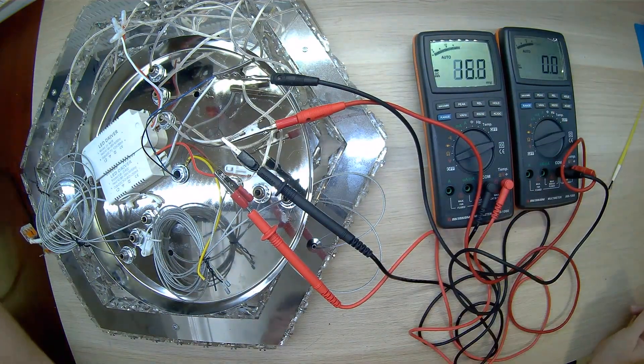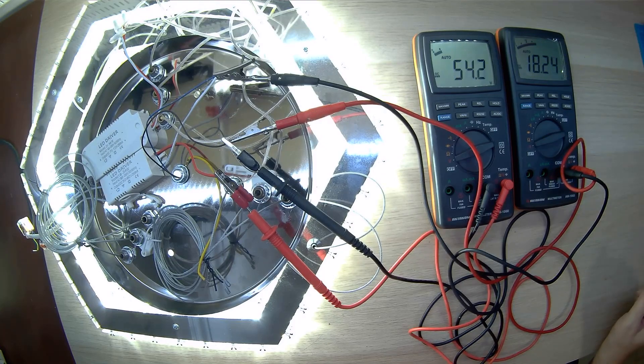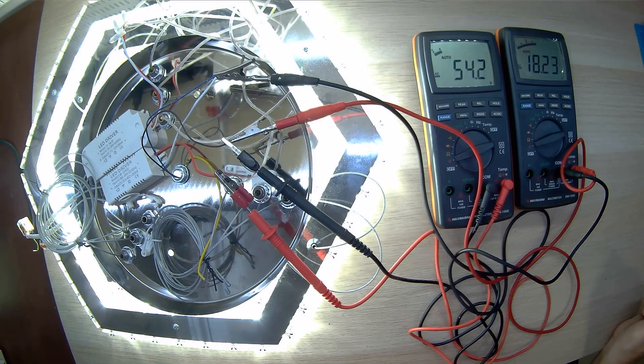We see everything works great. We also see the voltage in the middle section of the chandelier is 54V and in the LED ring is 18V.